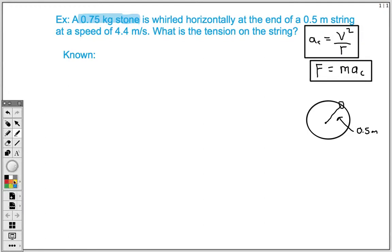That's going to represent our mass. We also know that we have a 0.5 meter string. That's going to be the distance of our radius. And then we also know that we are at a speed of 4.4 meters per second. And so that's going to be our velocity.